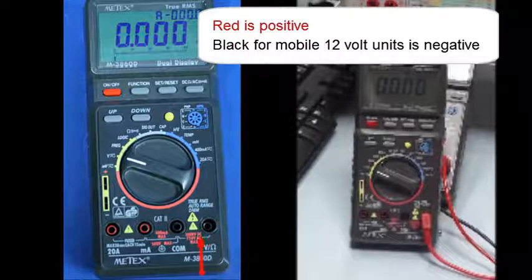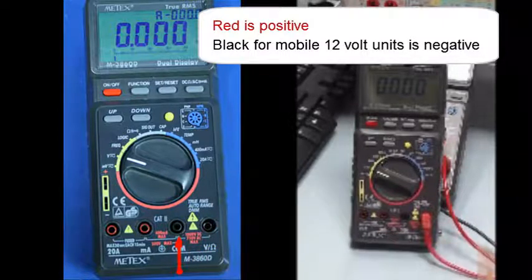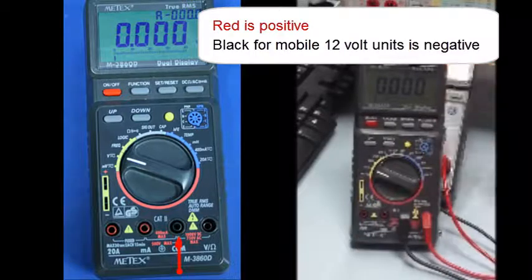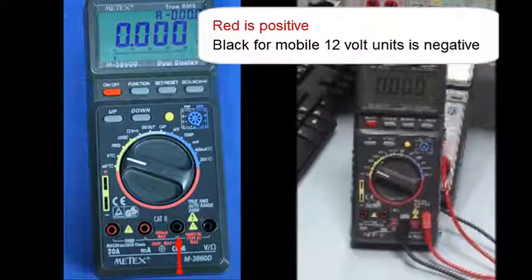Now, I need to have a common point. And that will be followed usually on almost all multimeters directly next to that, and that will be that probe right there. Black, for mobile 12-volt systems, is used to indicate the negative side. However, in AC electricity, the black is considered the hot side.